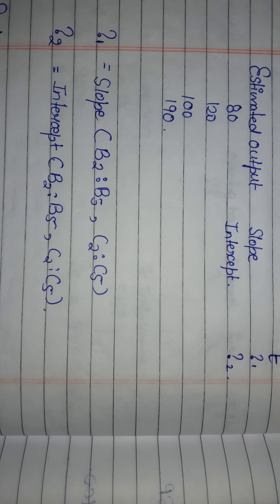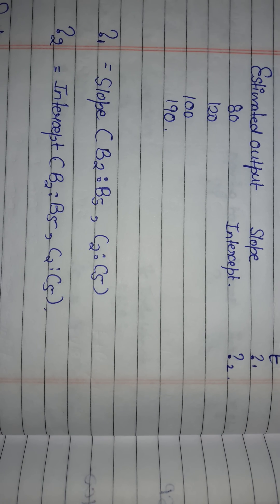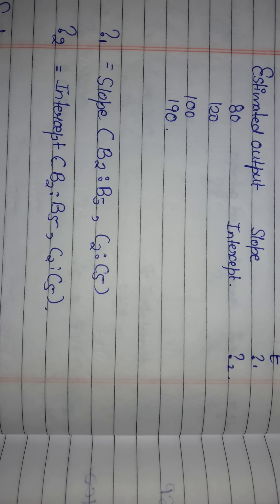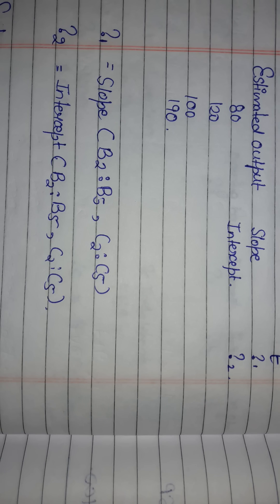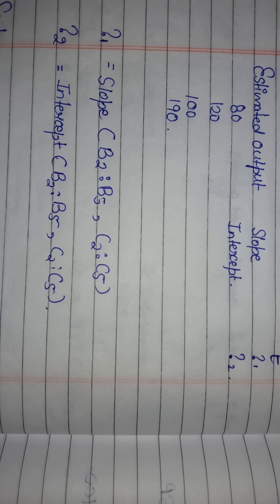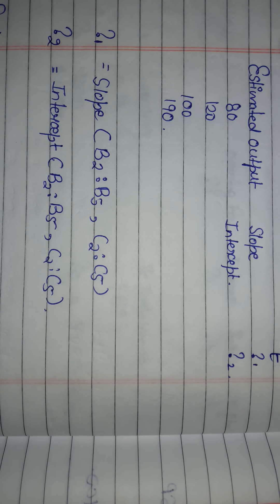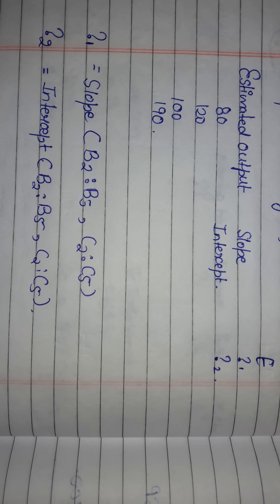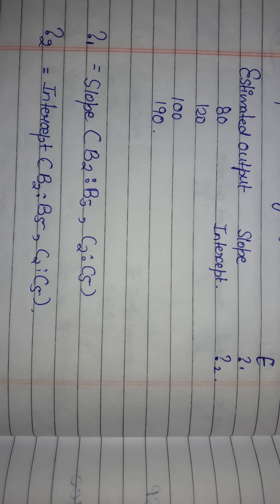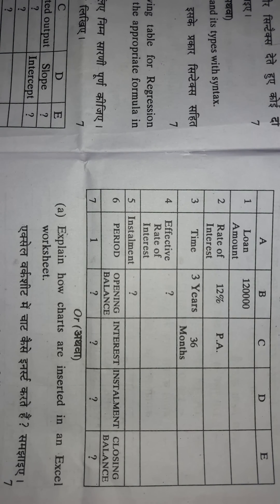If you check the answer from the 10-year question paper, you'll find the answers I am telling you are different from what is given there. If you do the questions practically on your computer using the 10-year formulas, you will get an error — it shows no result. But from these formulas which I am telling you, you will surely get the answer. I have done these questions practically and confirmed. Now let's move forward to the next question — loan and lease statement. All these questions are from the 2016 question paper.